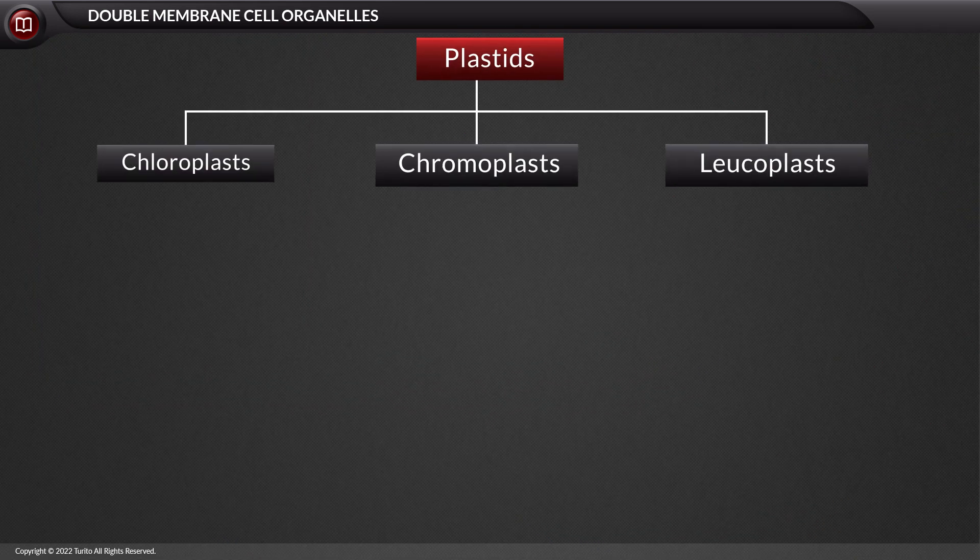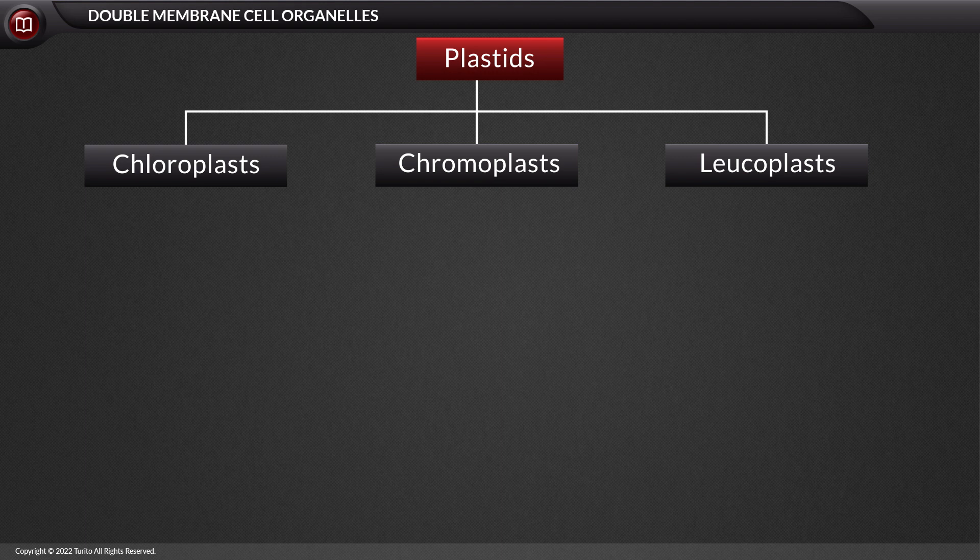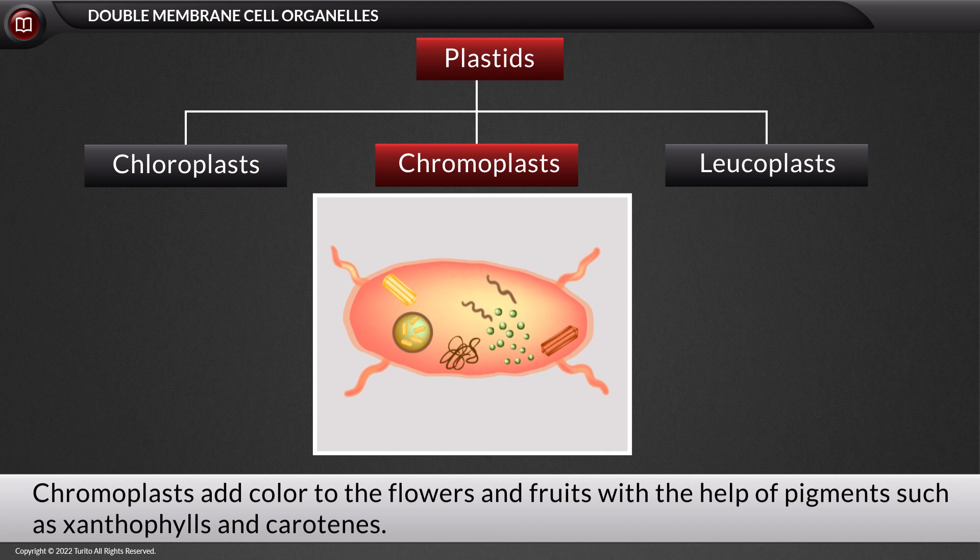Apart from chloroplast, there are two types of plastids present in the plant cell, namely chromoplasts and leukoplasts. Chromoplasts add color to the flowers and fruits with the help of pigments such as xanthophylls and carotenes.